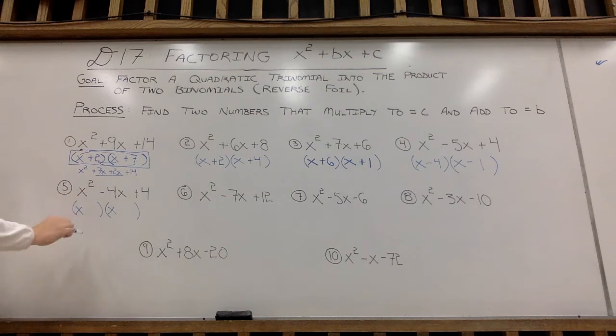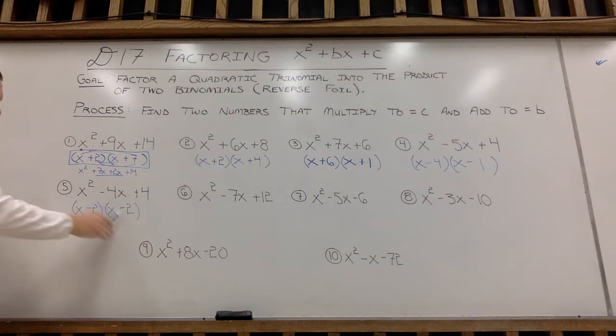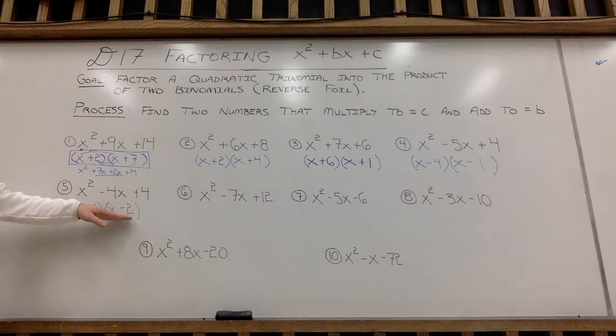x times x will give me the x squared. Again, a positive end c value and a negative middle b value. In this case, hopefully you can see x minus 2, x minus 2. Negative 2 times negative 2 is positive 4, and negative 2 plus negative 2 is negative 4. If you'd like, x minus 2 times x minus 2, you can write this as x minus 2 times itself, or x minus 2 squared. Either way is correct.